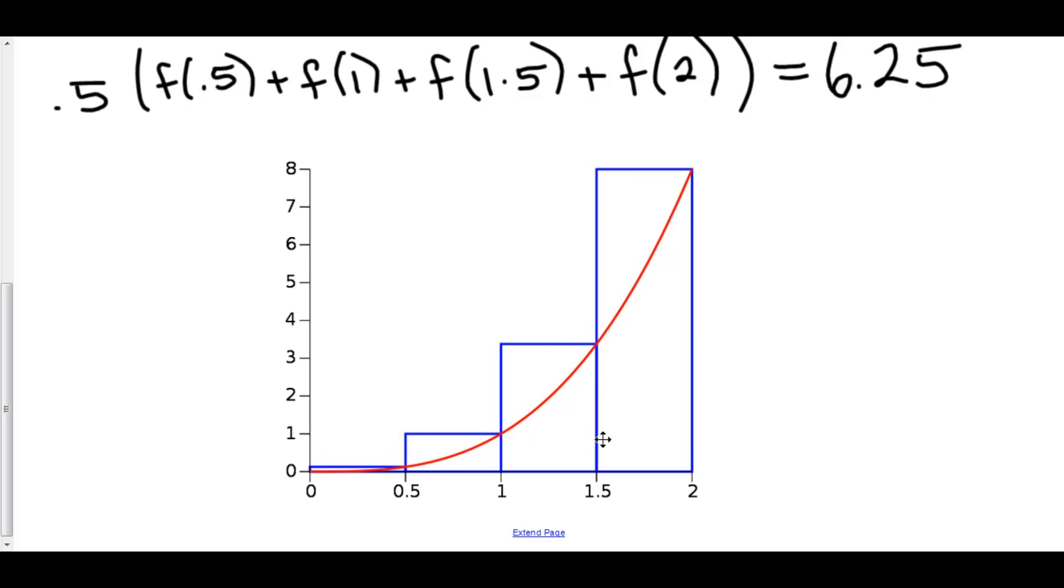Now, the left Riemann approximation was beneath the curve. However, here, our right Riemann approximation is way above the curve. So this is not a very good approximation. This is very high. And there you go.